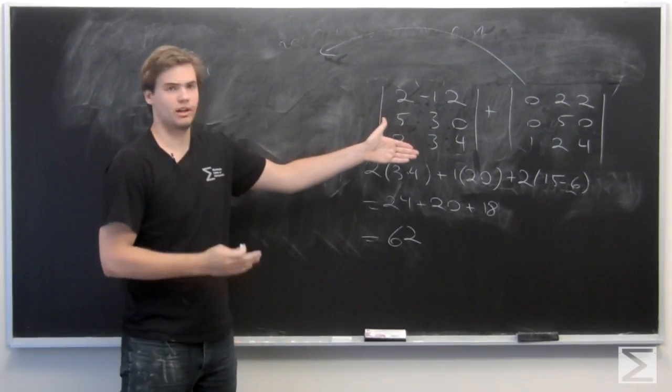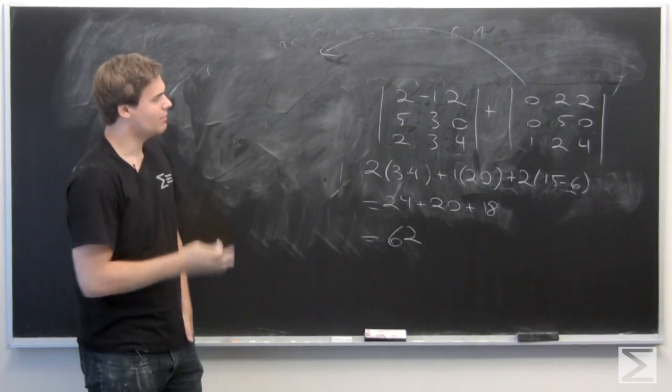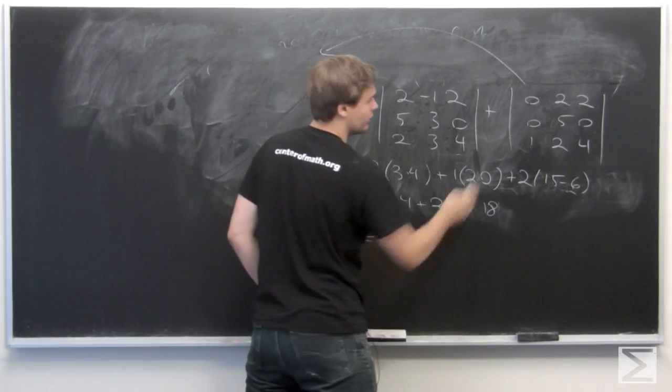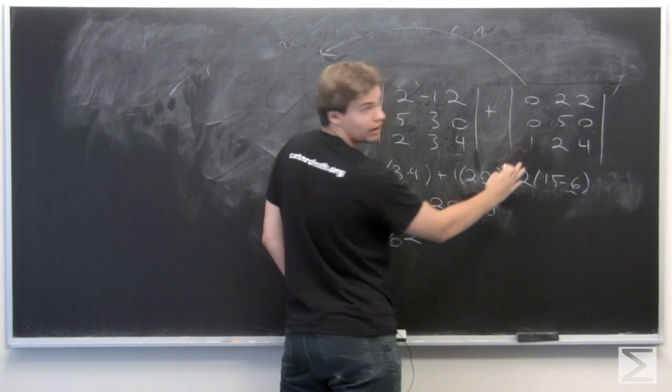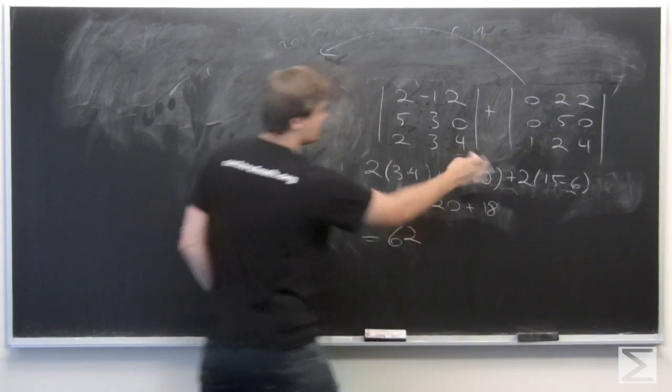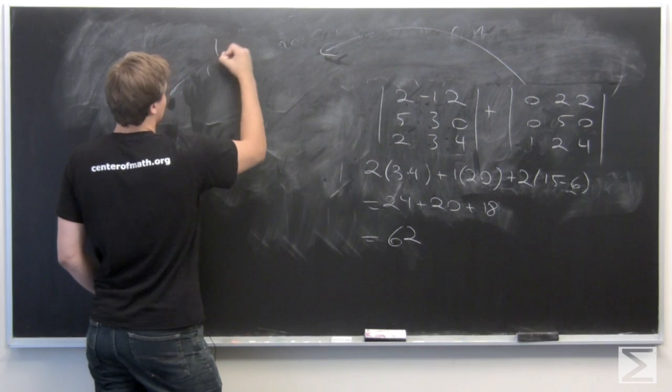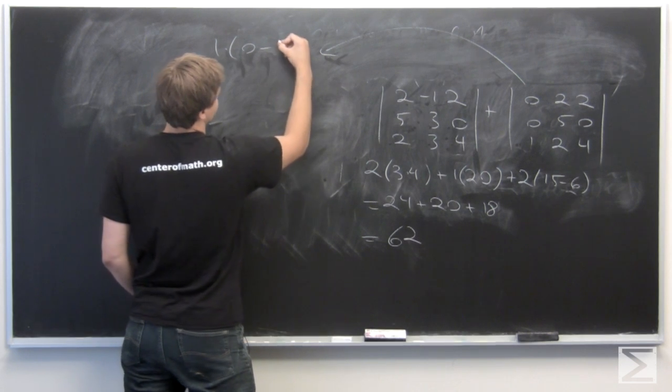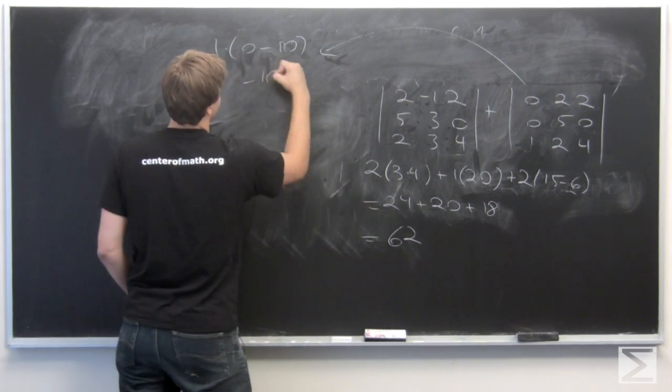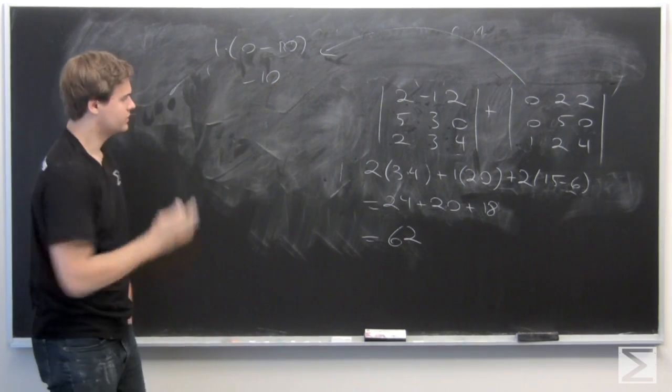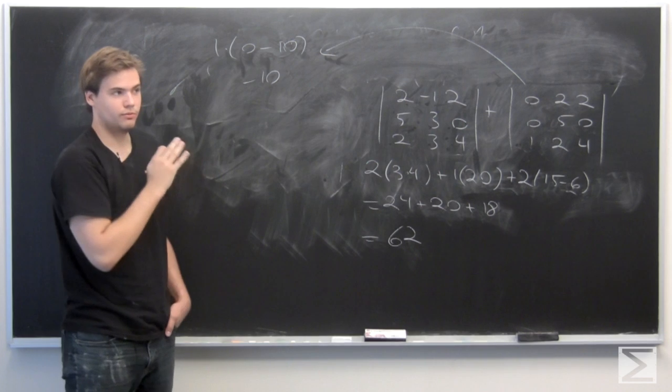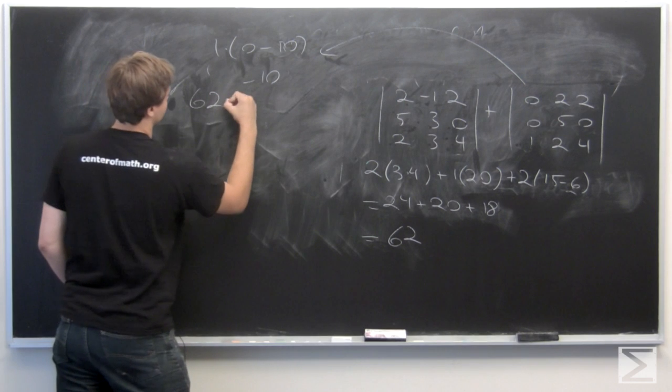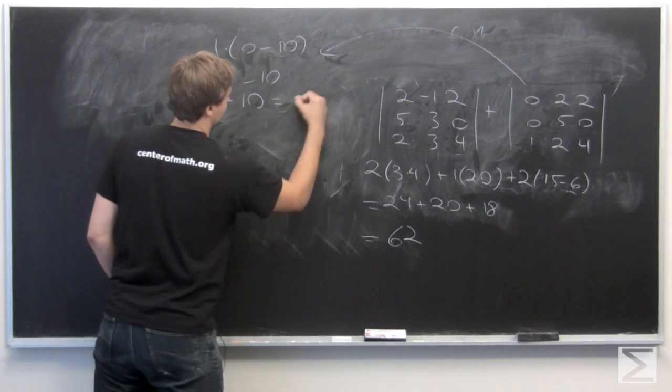This is a nice matrix because there are a lot of zeros in it. I'm going to expand along the left column. The only non-zero entry there is the 1 in the bottom, so the determinant of that matrix simplifies to 1 times 0 minus 10, so minus 10.